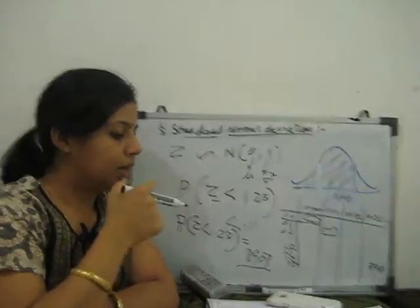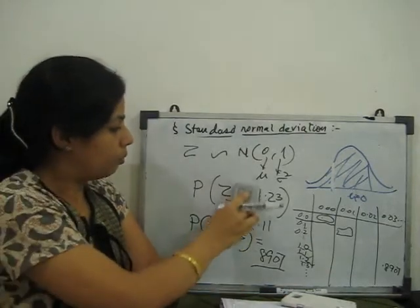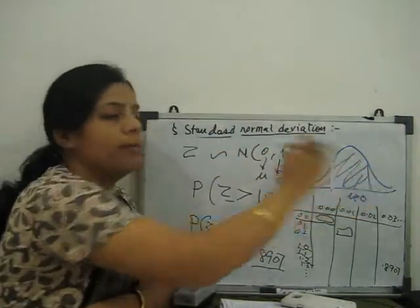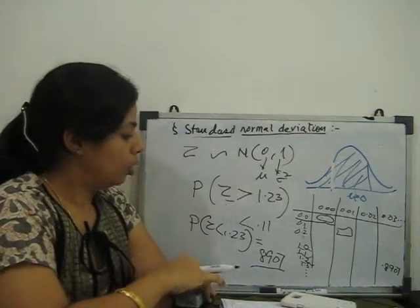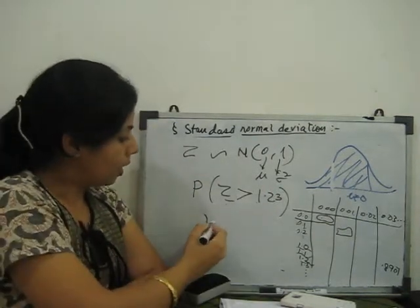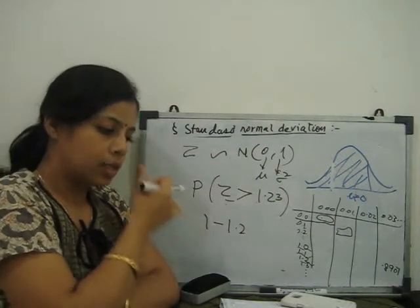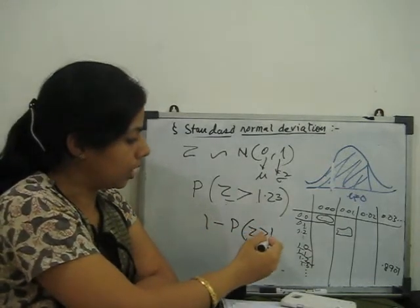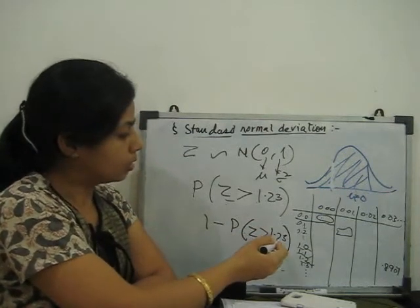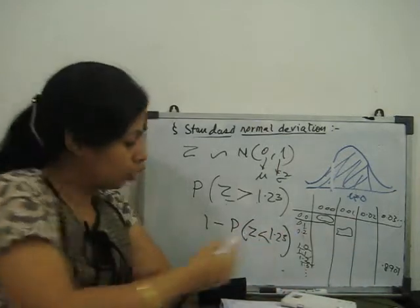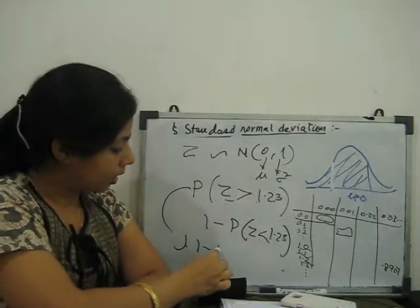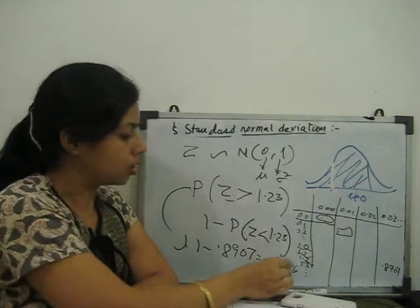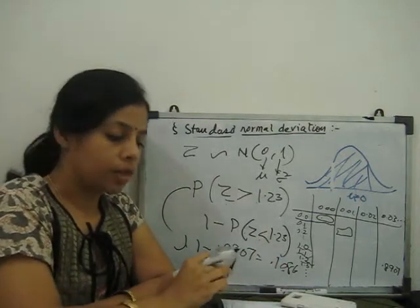If we want P(Z > 1.23), since total probability is 1, we use the complement: P(Z > 1.23) = 1 − P(Z ≤ 1.23) = 1 − 0.8907, which gives 0.1093.